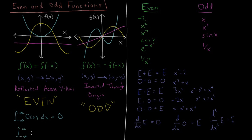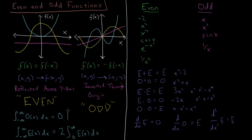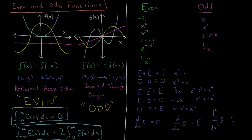Similarly, if we integrate an even function from -∞ to ∞, whatever we integrate from 0 to ∞ is the same with the same sign from -∞ to 0. So the total integral from -∞ to ∞ equals twice the integral from 0 to ∞ of that even function. If a function is completely even, you only need to integrate one half of it. These integral properties are very useful for calculating expectation values of position, momentum, and other quantities for the harmonic oscillator.